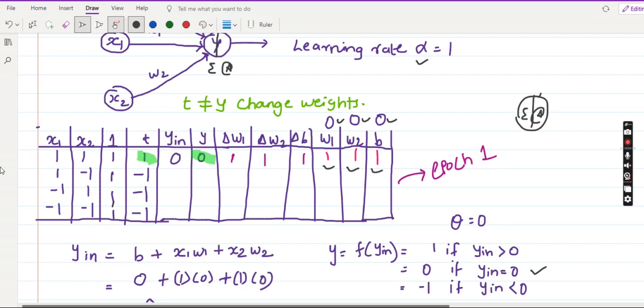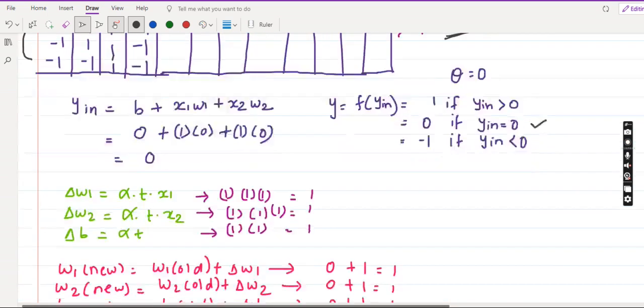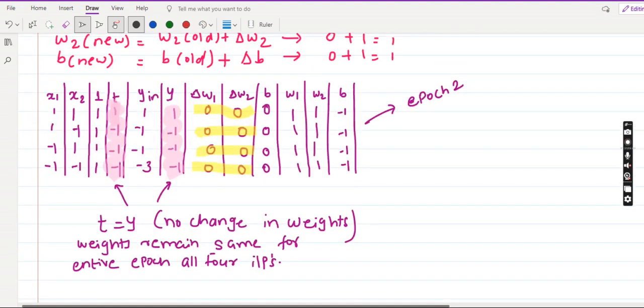Similarly you solve for all the four combinations and get the output. So this is how you complete one epoch. First epoch gets completed. Then you continue this for second epoch. Second epoch means you again give all the four different combinations of x1 and x2 with the initial weight and you calculate.